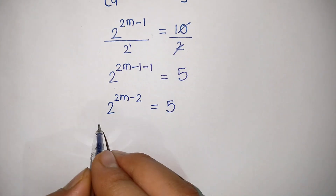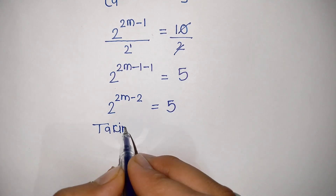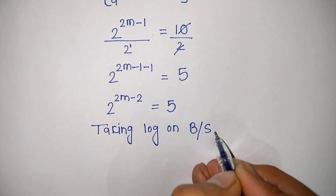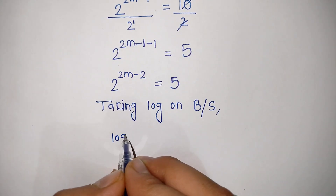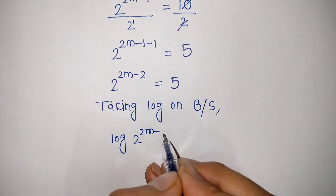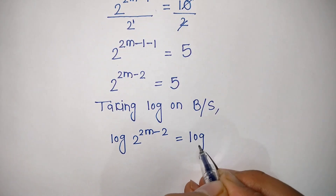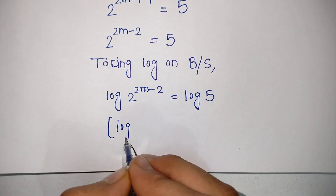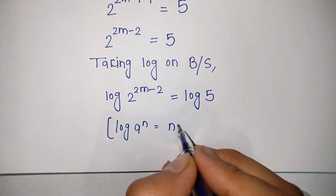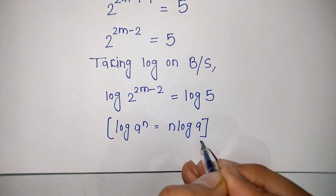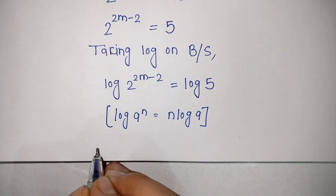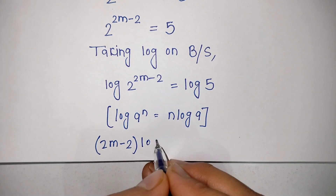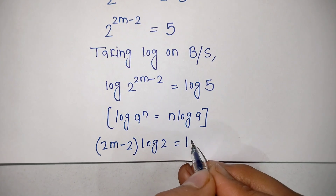Now taking log on both sides, we get log of 2 to the power 2m minus 2 is equal to log of 5. Now we know the log rule that is log a to the power n is equal to n log a. By applying this rule we can write the exponent 2m minus 2 in brackets, times log of 2, is equal to log of 5.